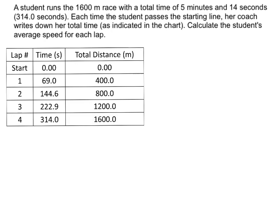Here's an example of a problem where we're going to calculate speed. A student runs the 1600 meter race with a total time of 5 minutes and 14 seconds. Each time the student passes the starting line, her coach writes down her total time as indicated in the chart below. Calculate the student's average speed for each lap.